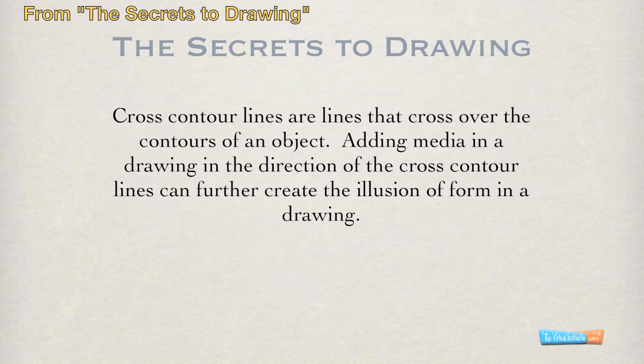Now, there are more types of lines besides contour lines. These are called cross contour lines, and cross contour lines are lines that cross over the contours of the object. In fact, it's almost a theoretical line. Adding media in a drawing in the direction of the cross contour lines can further create the illusion of form in a drawing.